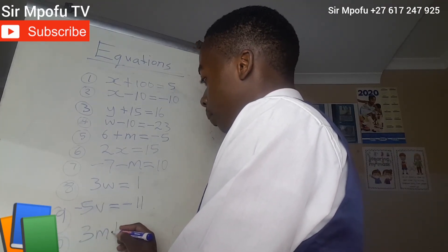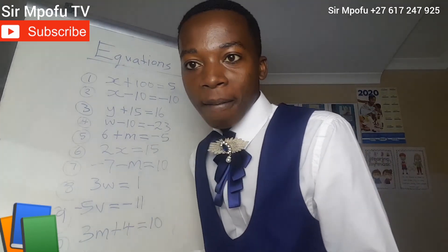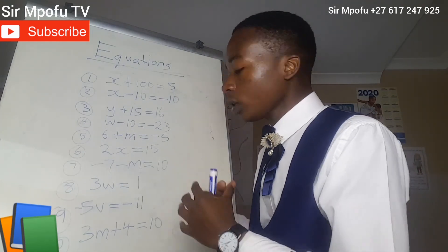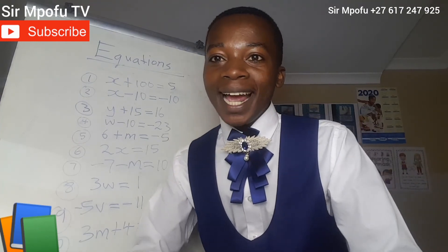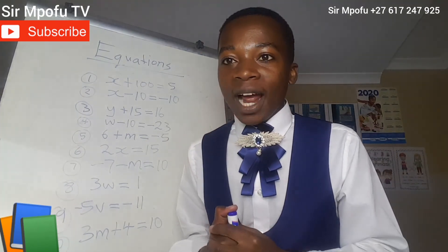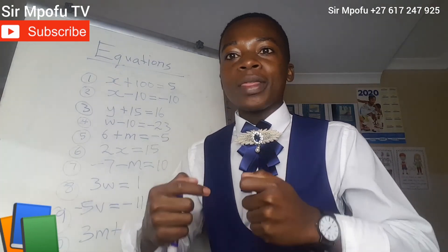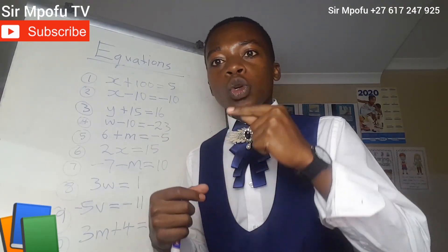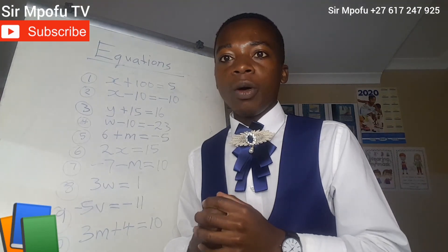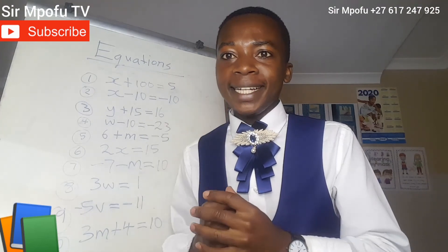Number 10: 3m plus 4 equals 10. Tell your friends and anyone you know who is struggling with mathematics to watch lessons from lesson 1 on Sempov TV YouTube channel. Don't forget to like the video if you like it and understand it. Stay focused.